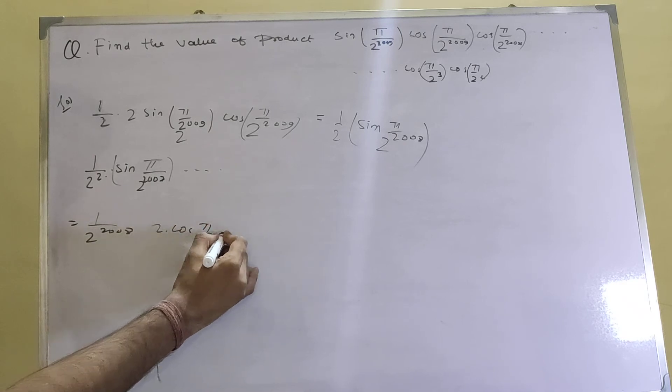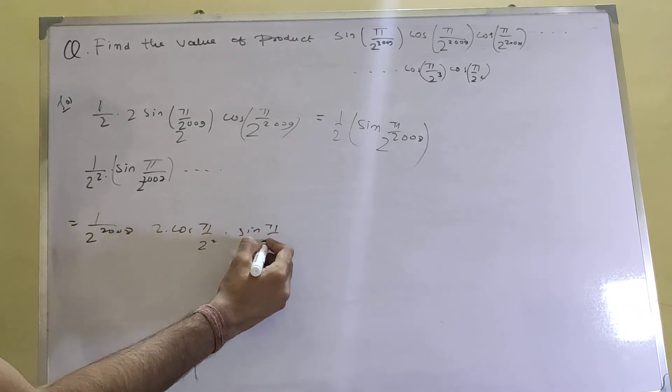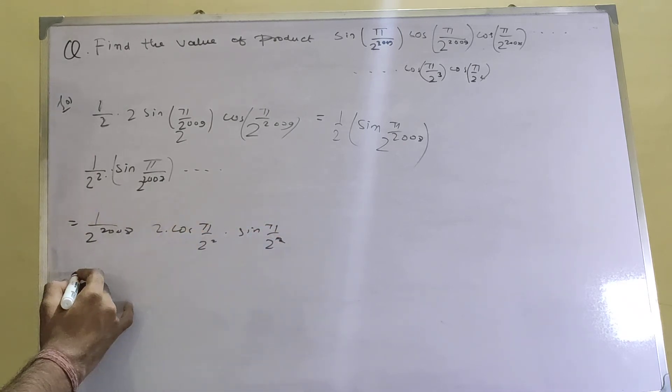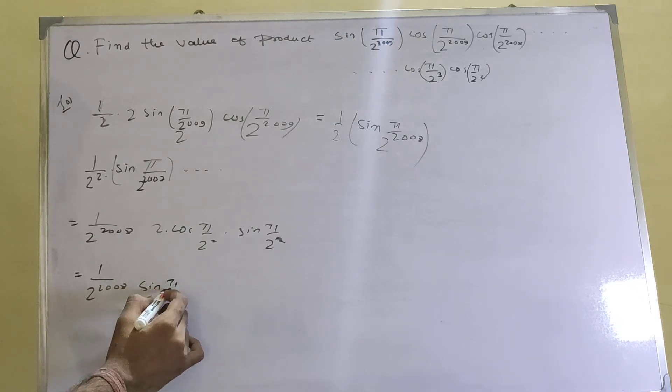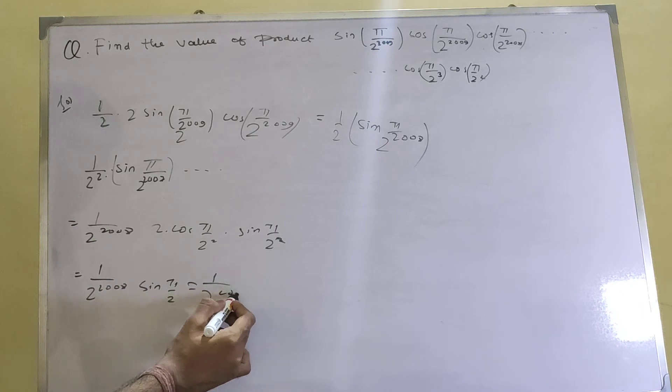So this will basically be 1/2^2008 sin(π/2), which is 1/2^2008. This will be the answer. The question is very easy, just need to apply the logic here.